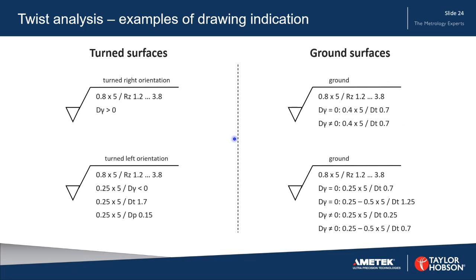Here are some examples of how we may see twist analysis on drawings. The things to point out here are that there are different indications for turned surfaces and ground surfaces, and also for the direction of the twist — whether it is turned right or whether it is turned left.